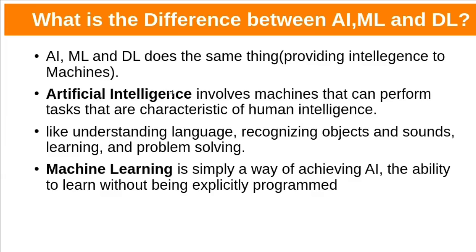Artificial intelligence techniques provide intelligence to machines so machines can perform tasks like humans, like they can understand language, recognize objects and sounds like humans. Any technique which provides intelligence to machines comes under artificial intelligence, including machine learning and deep learning. Machine learning algorithms recognize complex patterns and make intelligent decisions based on data without being explicitly programmed. Simply we can say achieving AI without explicit programming.